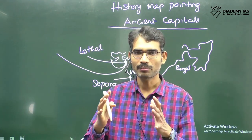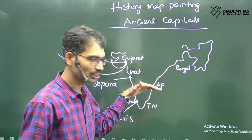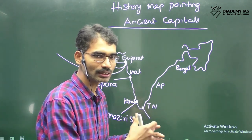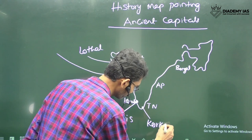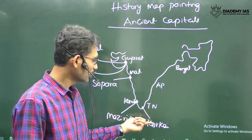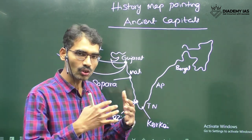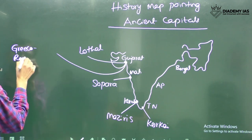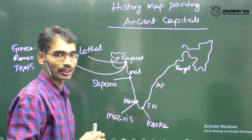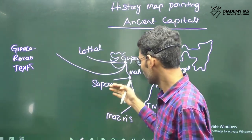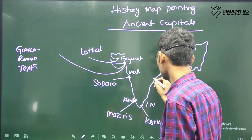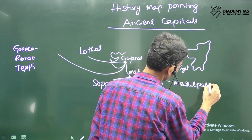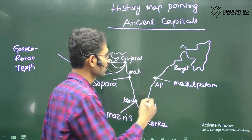During the Sangam time period — a very important stage of historical development in South Indian history — the Chera Kingdom flourished. Madurai was the capital of the Pandyas, and the Pandyas maintained the port of Korkai. With respect to Andhra Pradesh, there was Masulipatnam, modern-day Machilipatnam. In Bengal, there is one important port: Tamralipti.